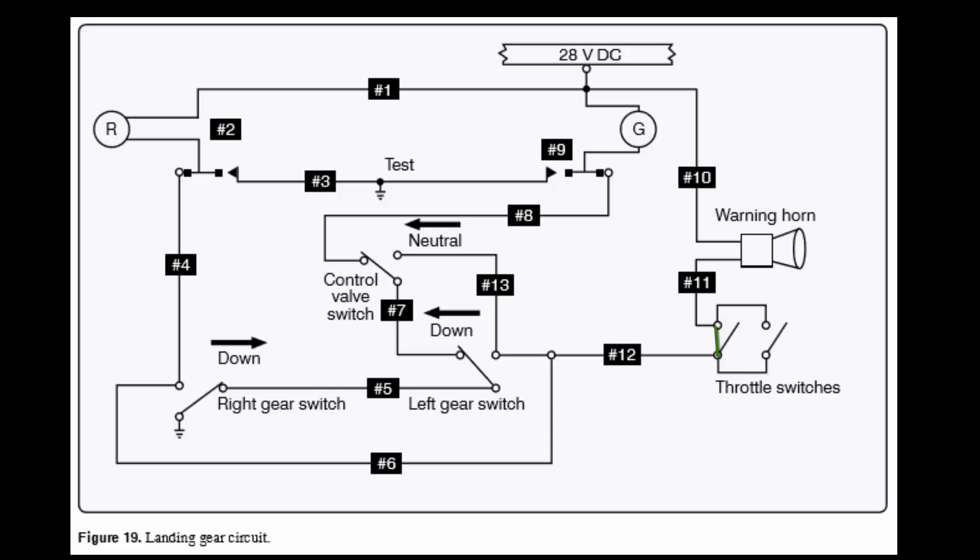If we go down wire 11 and the question said throttle switches are closed, we close the switch. We can go through this to wire 12. We've got three different ways we can go at this juncture. It says through both gear switches. It doesn't say both gear switches are down. It says it's got to go through both gear switches. So if we go up, it didn't say anything about the control valve. So that means it's going to be the condition as shown. So we go up to wire 13. That's a dead end.